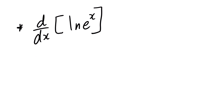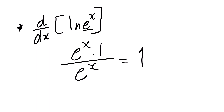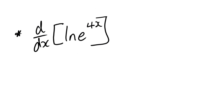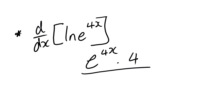For the sake of mastering, let's find the derivative of ln(e to the power 4x). We know the derivative of a natural log is the derivative of what's inside over what's inside. The derivative of e to the power 4x is e to the power 4x multiplied by 4, all divided by e to the power 4x. The e to the power 4x terms cancel, leaving a final answer of 4.